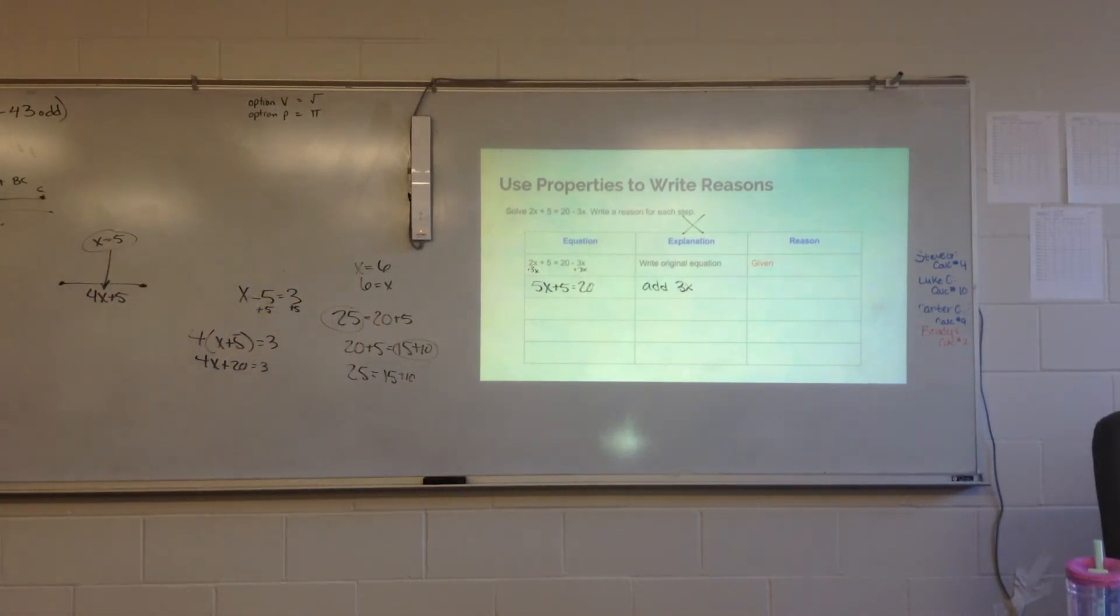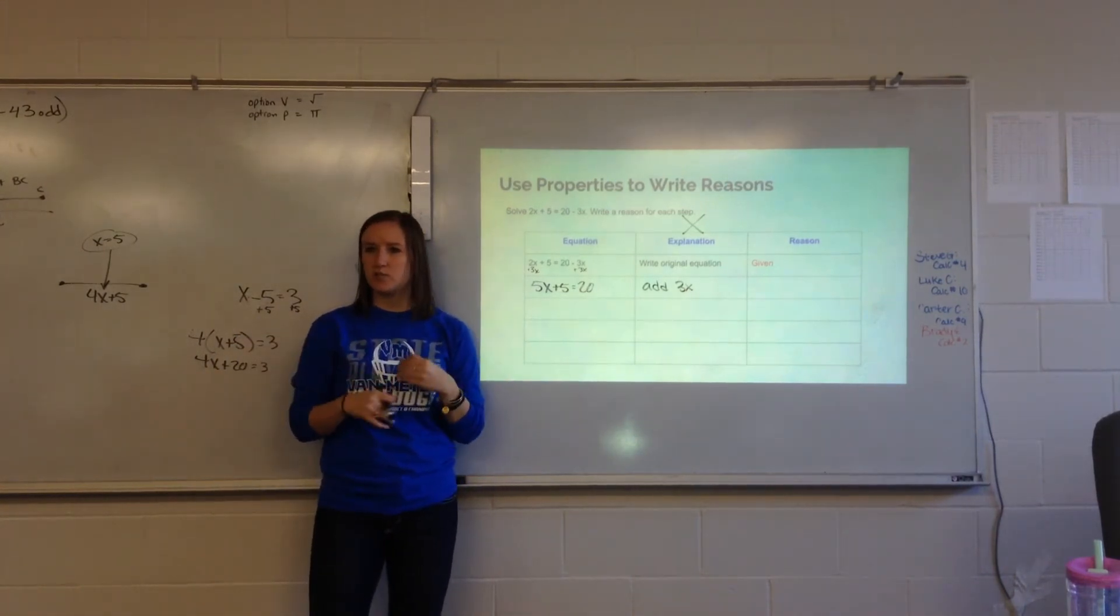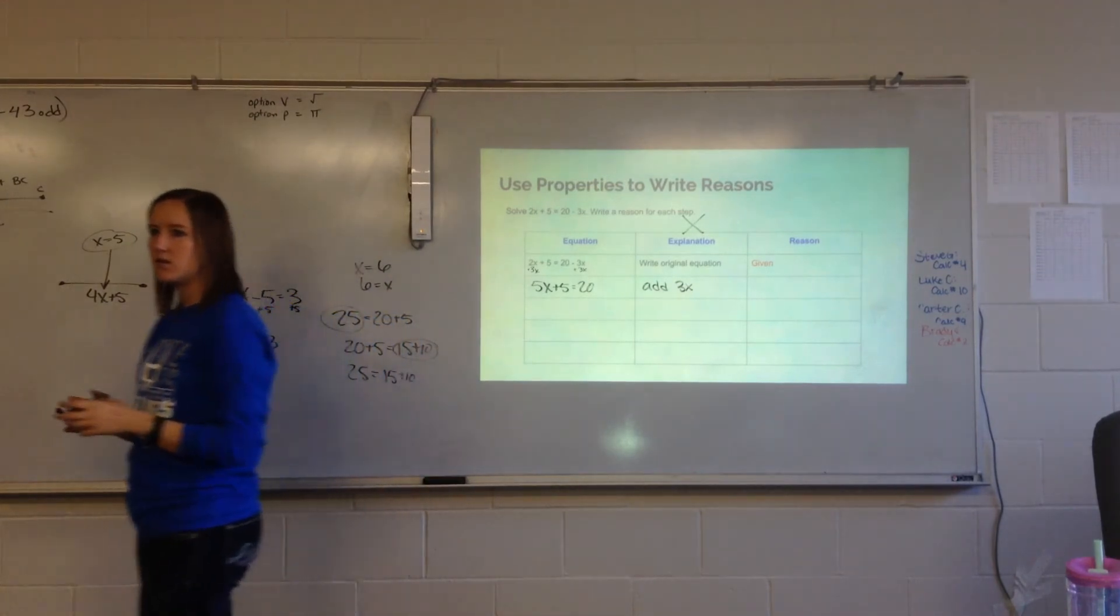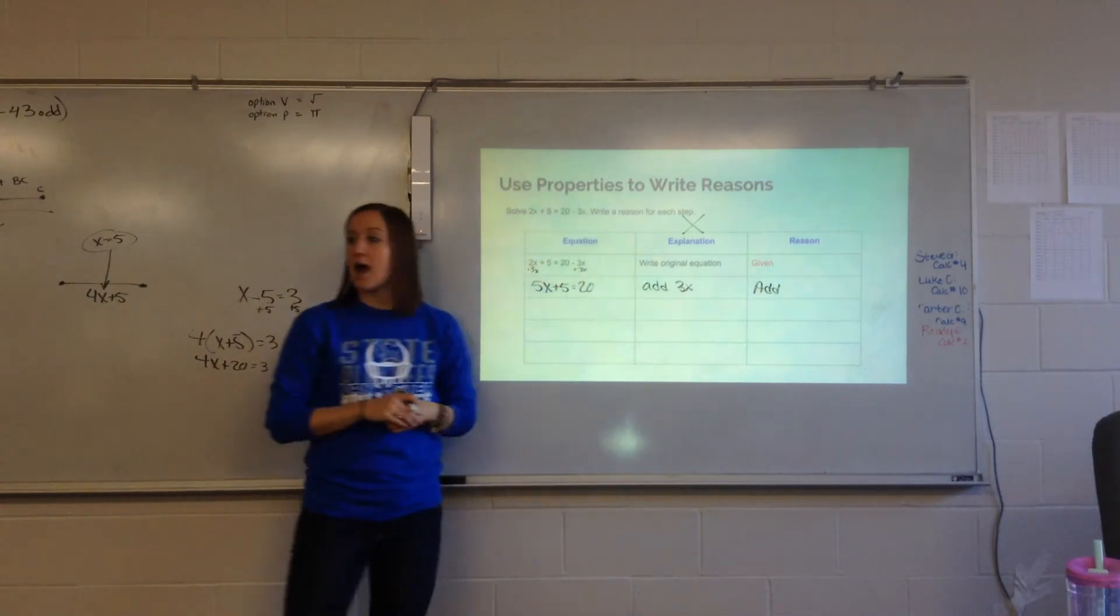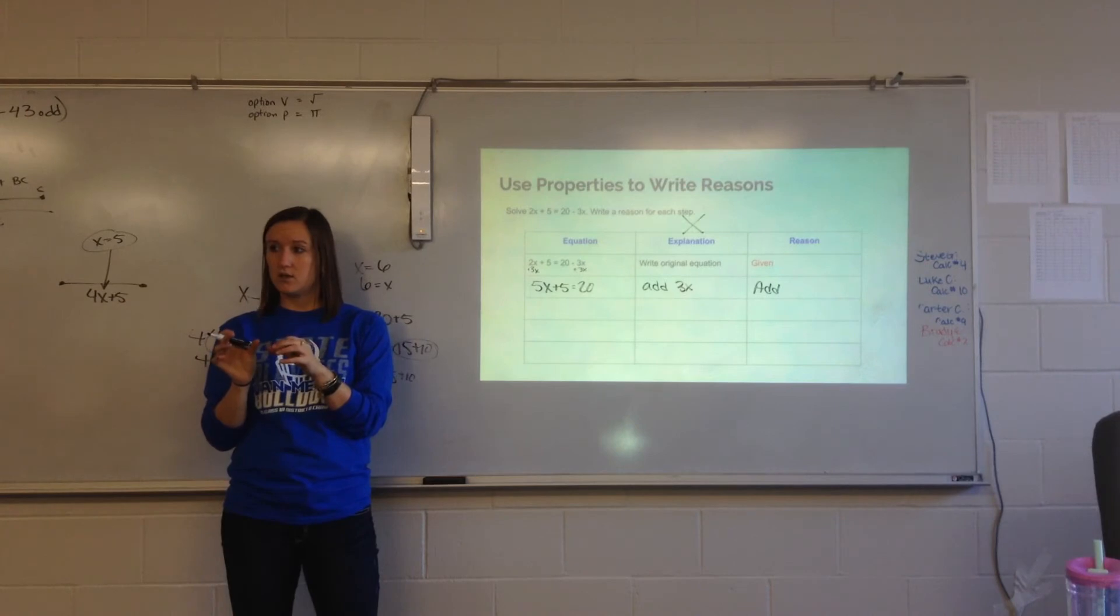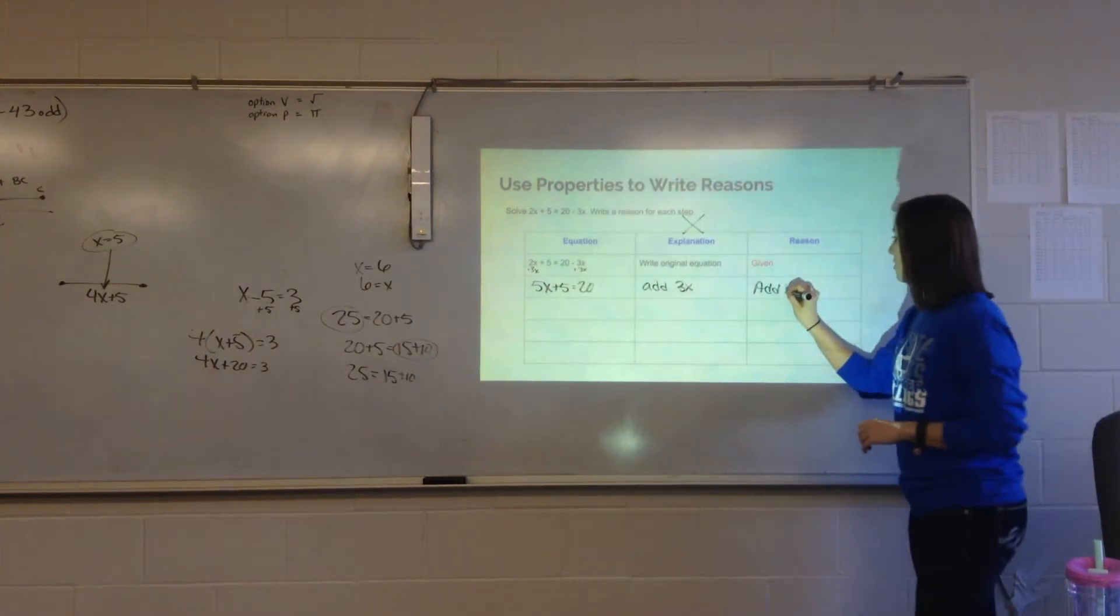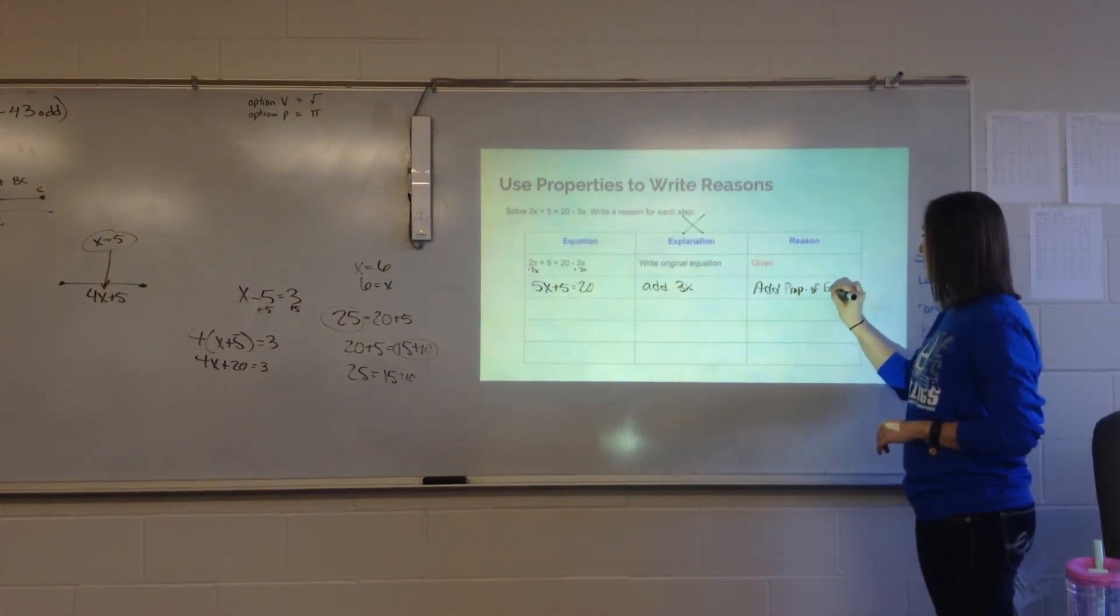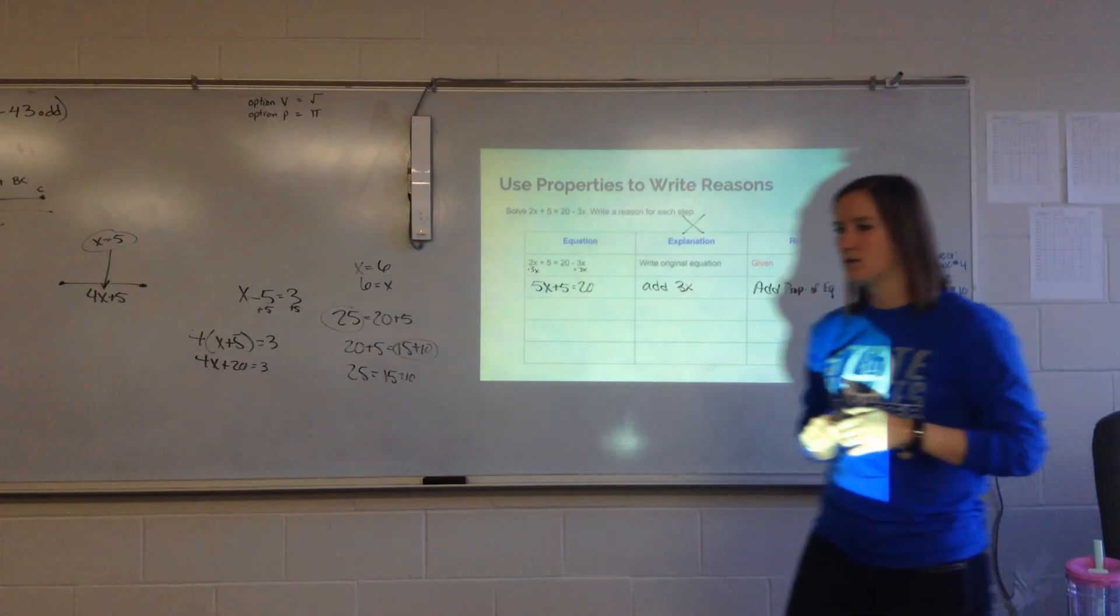Now, the reasons are always going to be properties or postulates. Our reasons are always definitions, theorems, properties, postulates. So, if we are adding 3x to both sides, which property tells us we can add on both sides? Addition property of equality. Now, I'm fine with you abbreviating things, but you need to have each part. So, we need the addition, we need property, and we need the equality part.